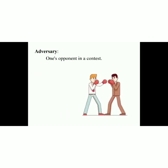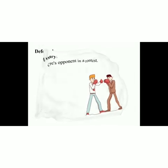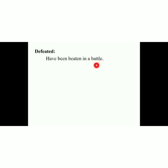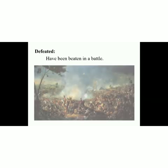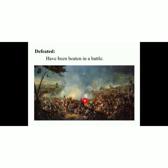The next word is 'adversary,' which means one's opponent in a contest. An opponent is someone who is opposite to you, fighting against you either in a competition or a dispute. The person who is against you and fighting you is known as your adversary. As you can see, these two are fighting against each other, so both are adversaries to each other. The next word is 'defeated,' which means to have been beaten in a battle. When you lose a war, that is known as defeat — you are known as defeated. As you can see in this picture, it is a war battle scene where one group is defeated by another.